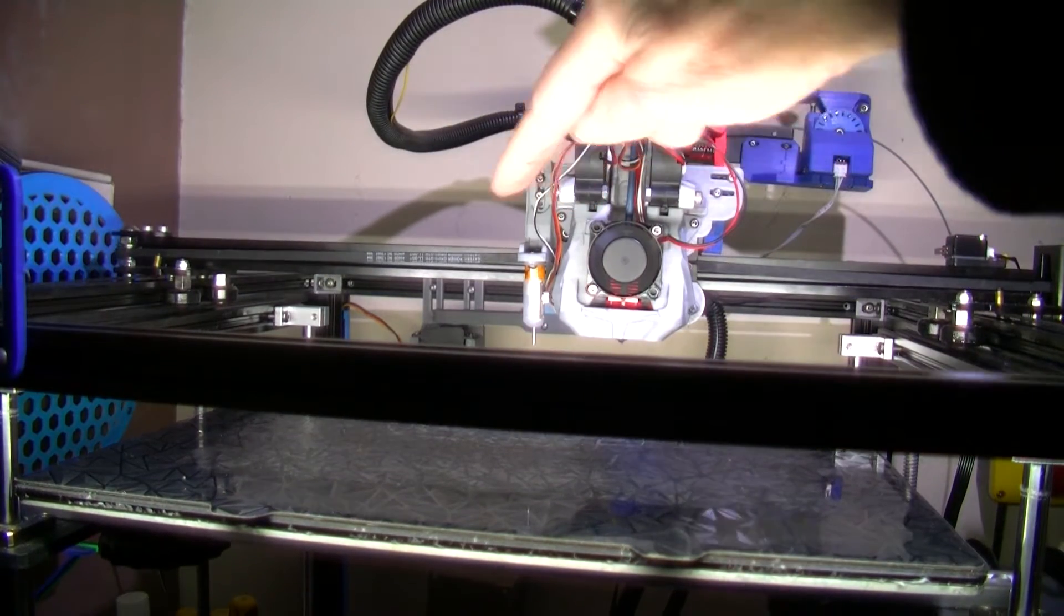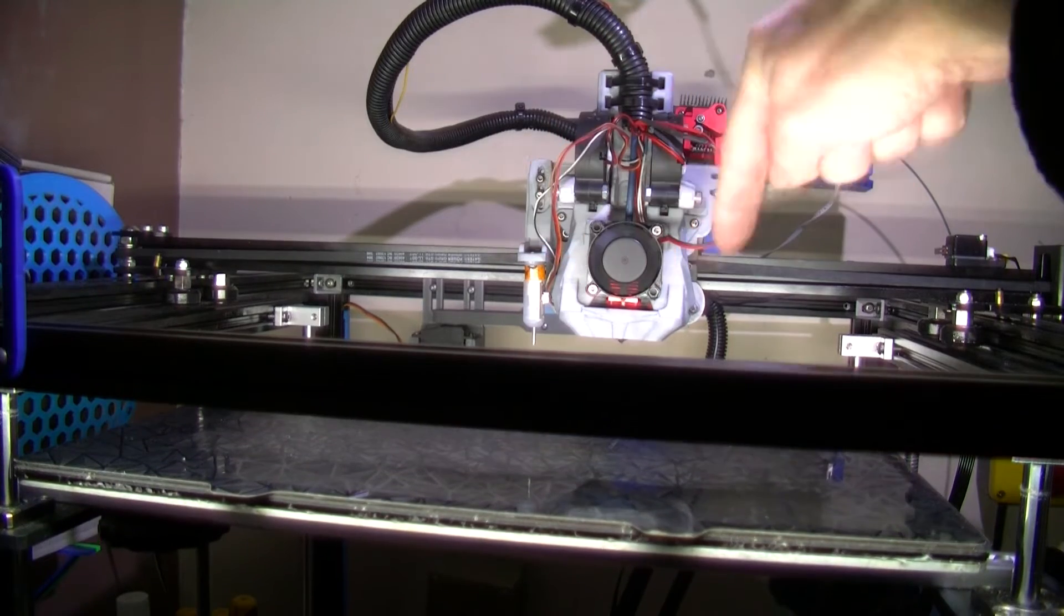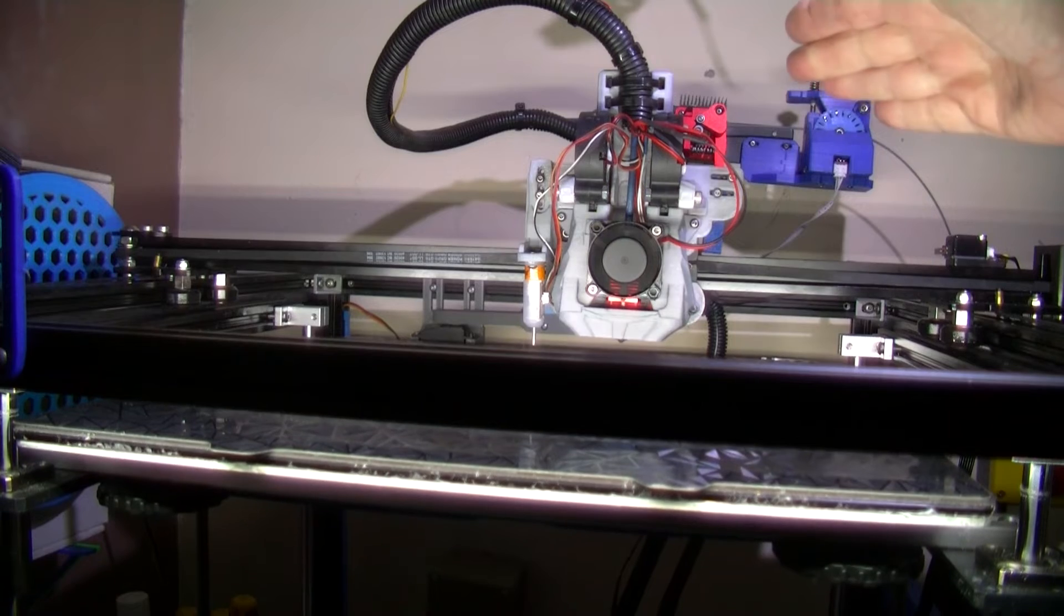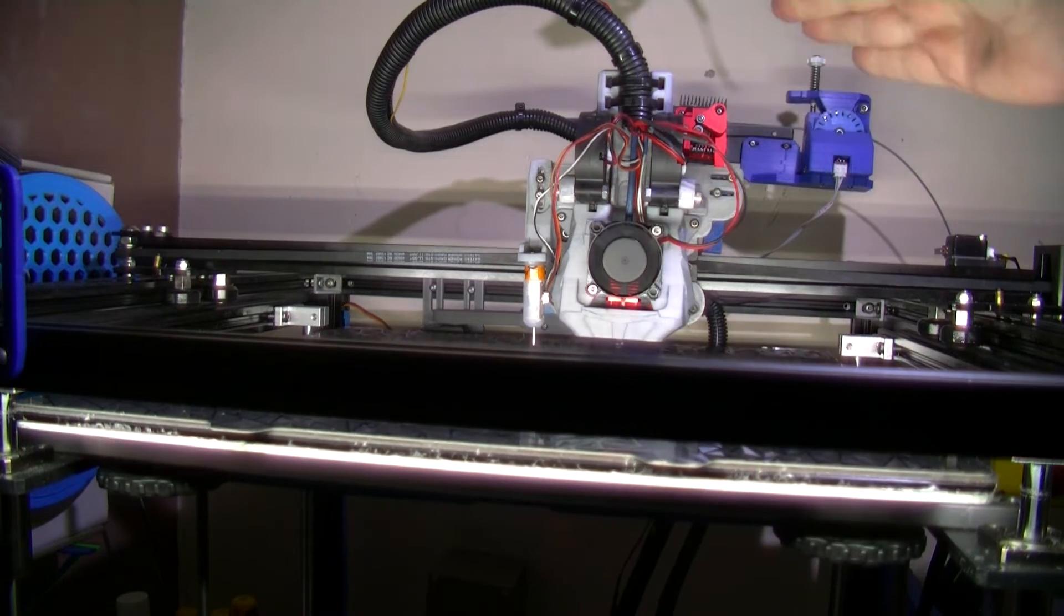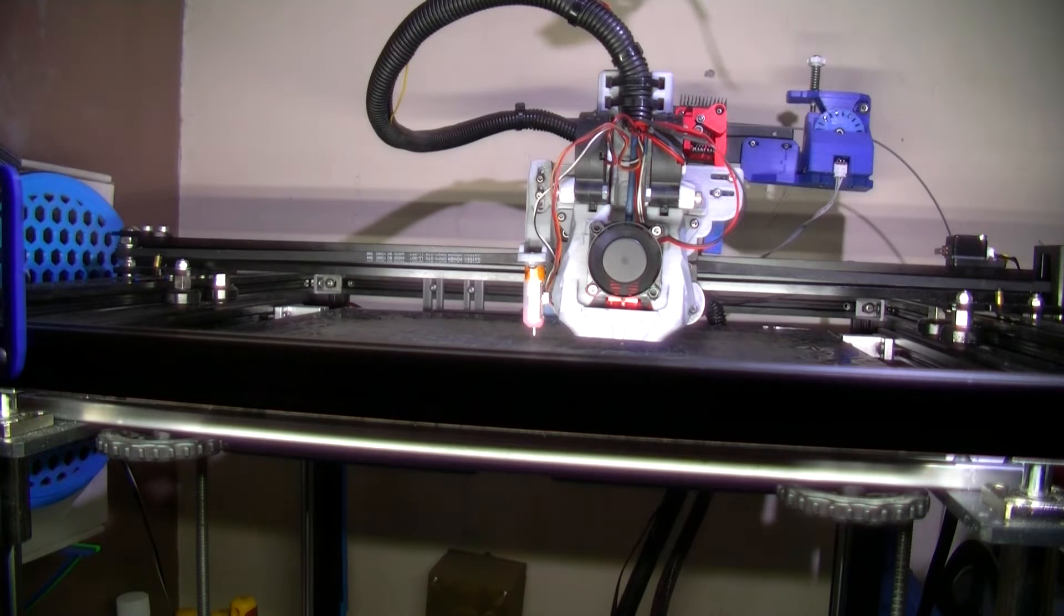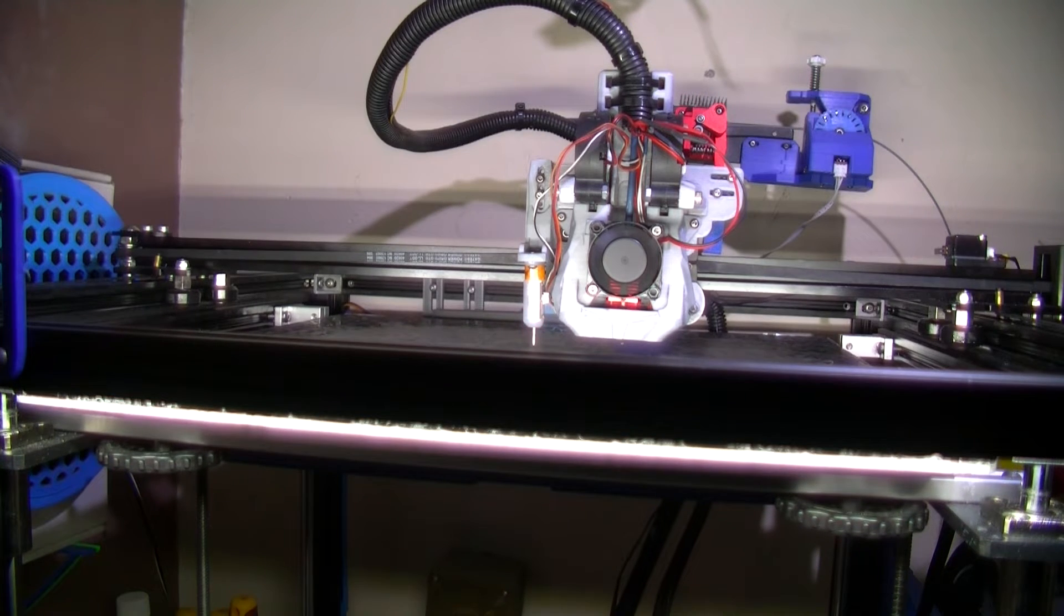The very first thing it does in my start G-code is make sure that the servo's arm is right out the way at the back. Then it does a home so it knows the position.